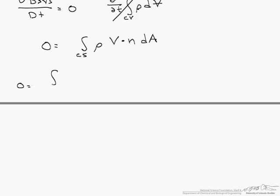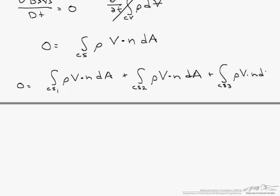0 equals the integral over control surface 1 rho, v dot n, dA plus the integral over control surface 2 rho, v dot n, dA, and finally over control surface 3 rho, v dot n, dA.